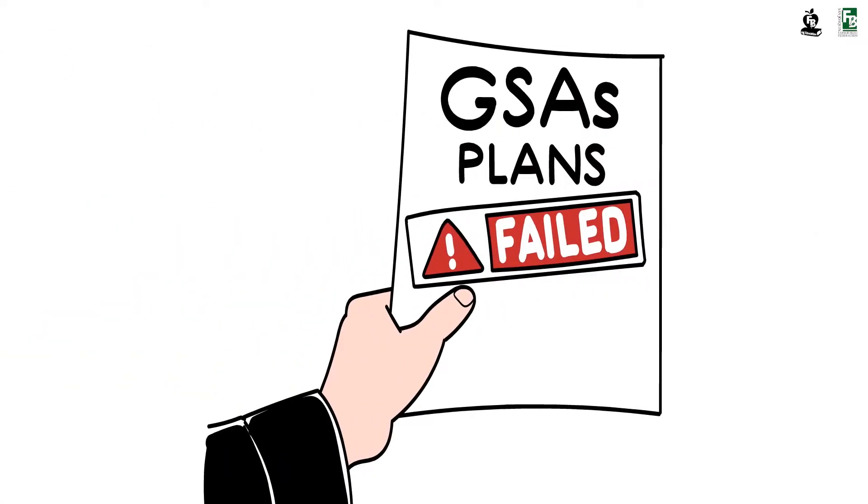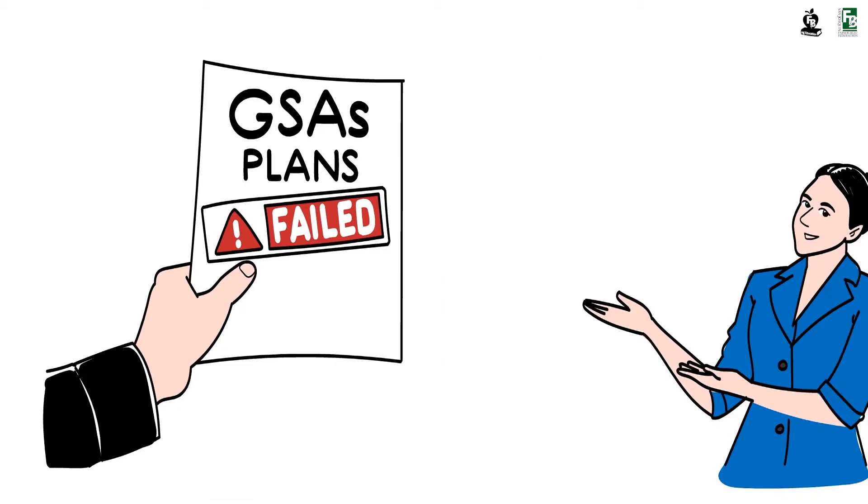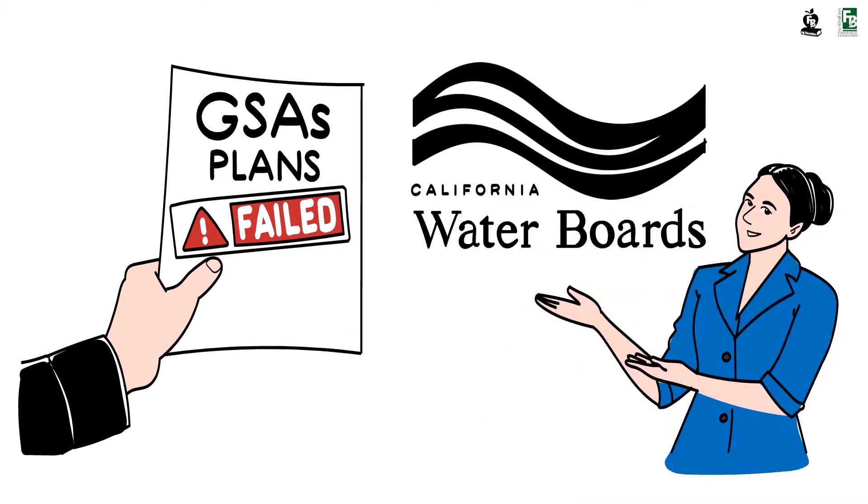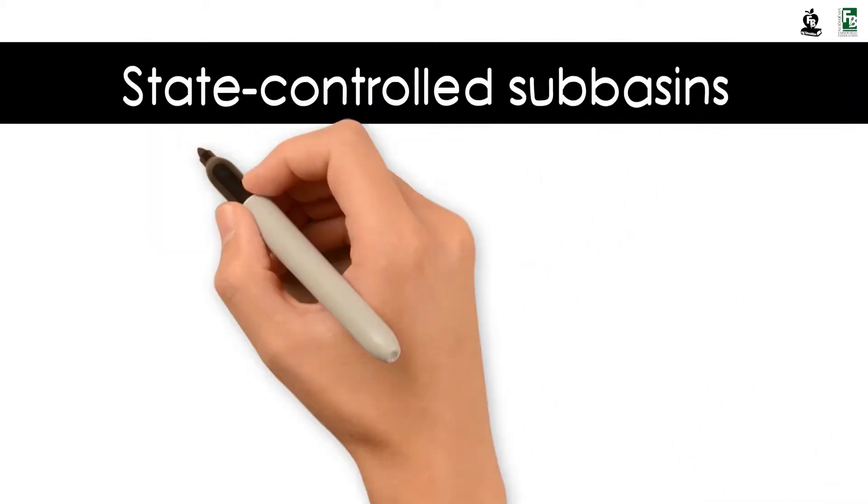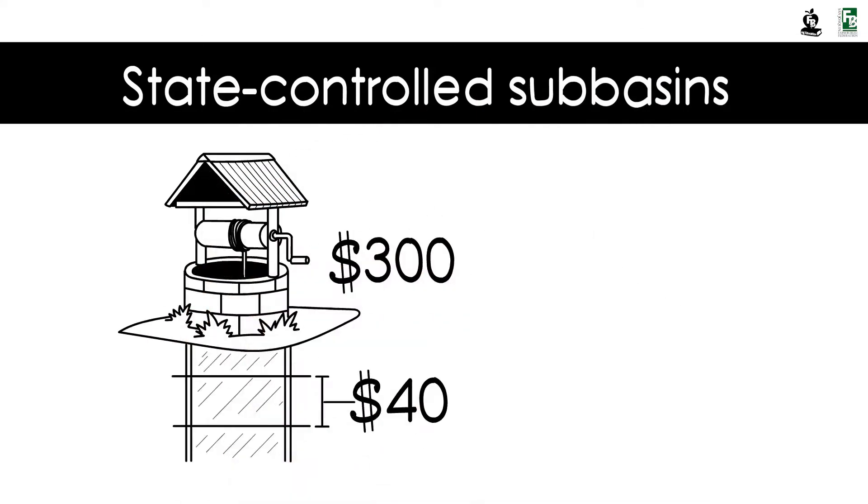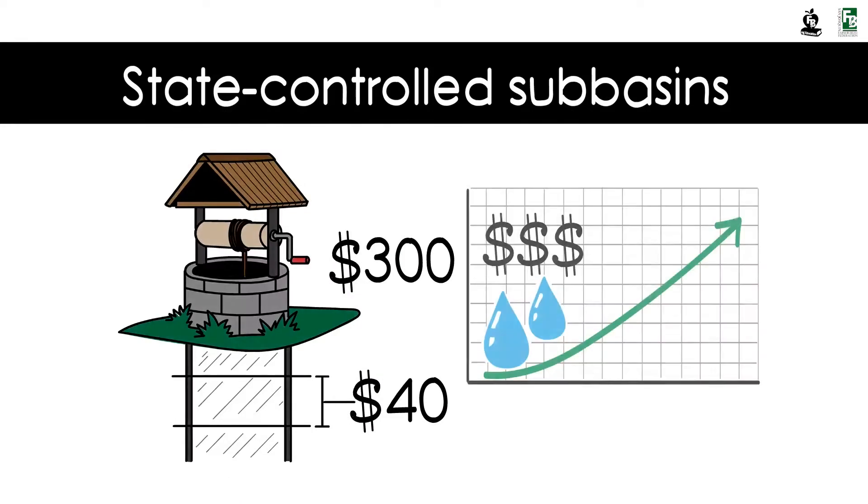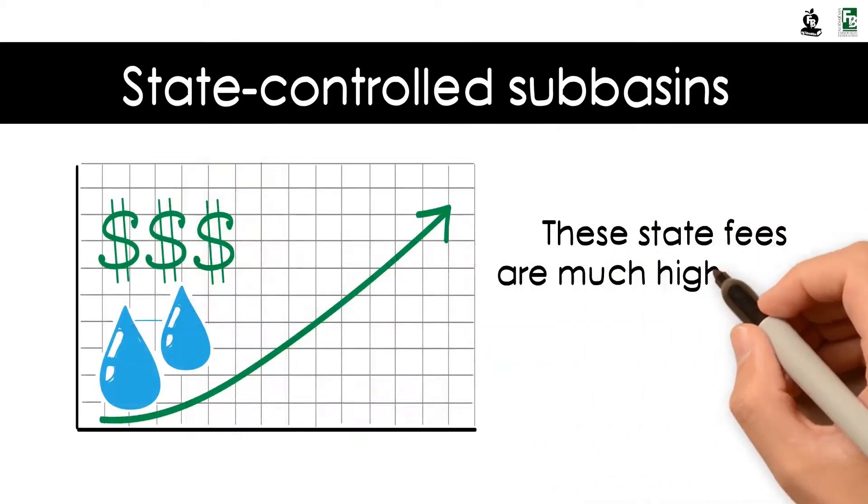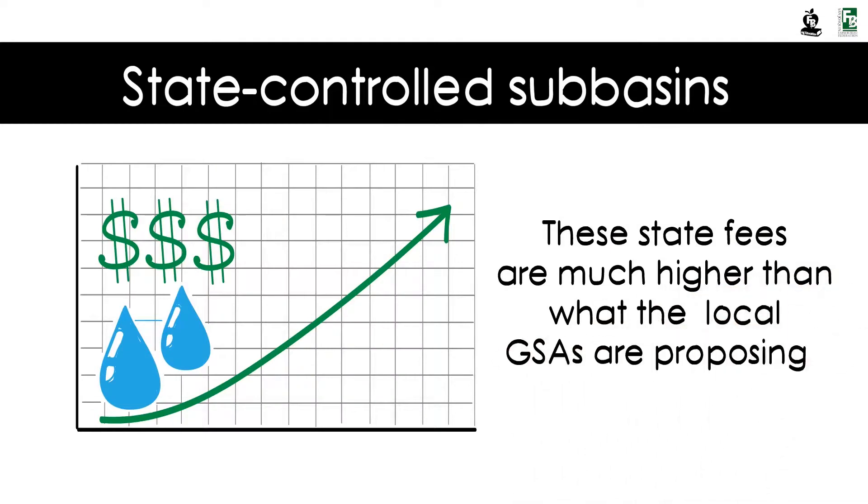If groundwater sustainability agencies fail to meet basic requirements, or their GSP contains significant deficiencies that are not corrected once identified, then the State Water Resource Control Board can dictate groundwater management locally and implement its own requirements. Currently, state-controlled sub-basins charge fees of $300 per well and $40 per acre-foot pumped, and fees are expected to increase over time.